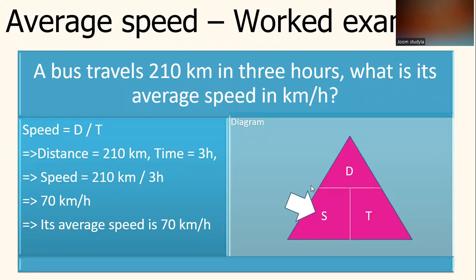Let's look at one of the examples under average speed. A bus travels 210 km in three hours. What is its average speed in km per hour? The question asks you to find the average speed. What is the formula for average speed? To find average speed is distance divided by time. Given here, the bus travels, the distance is 210 km in 3 hours. So time is already given. Distance also is given. Time is 3 hours.